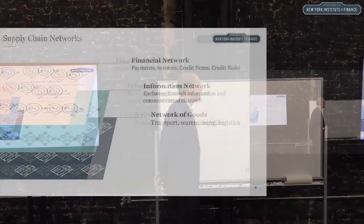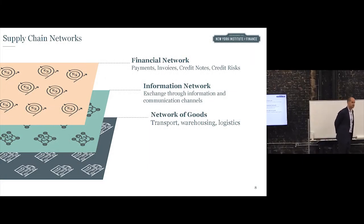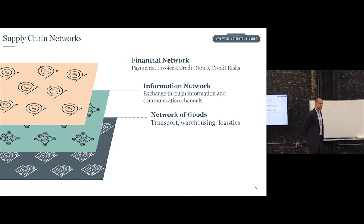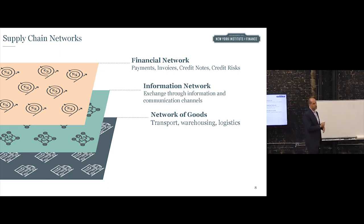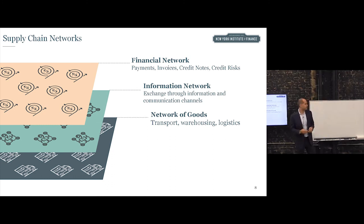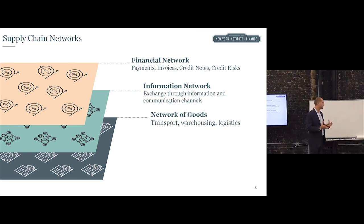Supply chain finance also involves a financial network — like payments, invoices, credit notes, and credit risk. And in between the physical supply chain and the financial supply chain, interacting with both, is the information network, which involves exchange through electronic means like invoices, payments, and communication channels. All of this together is where supply chain finance is acting.